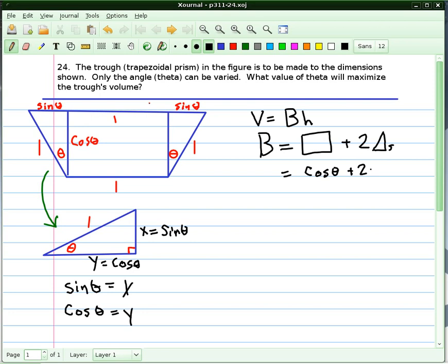In terms of this formula here, the area of the rectangle is cosine theta times 1. And two of the triangles would be 2 times 1 half times the base, which is cosine theta, times the height, which is sine theta. That's what we're going to have to maximize.